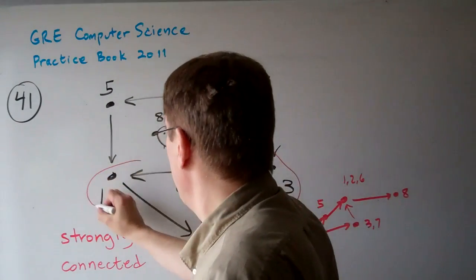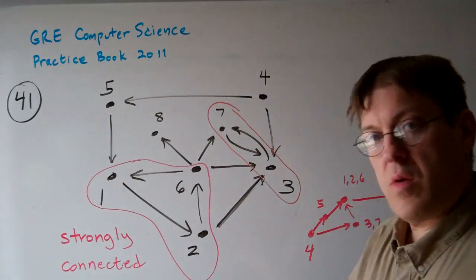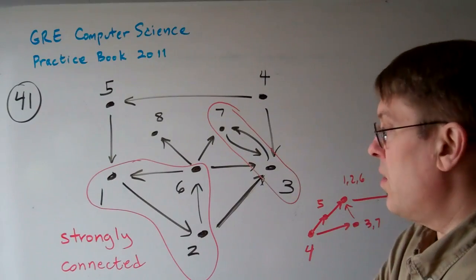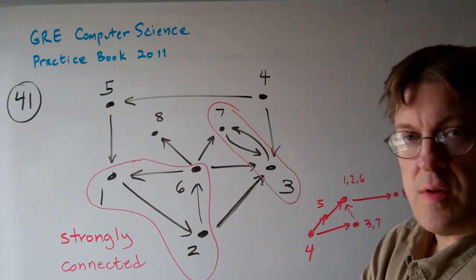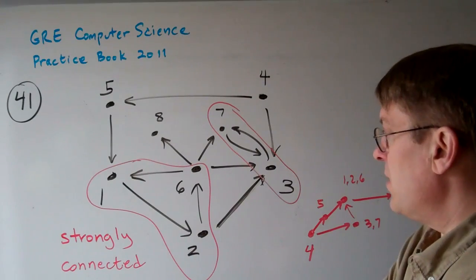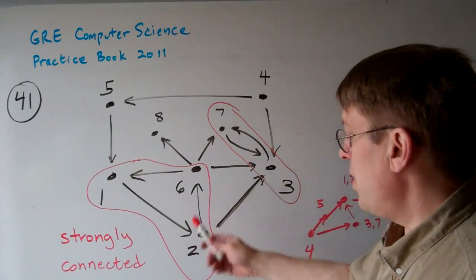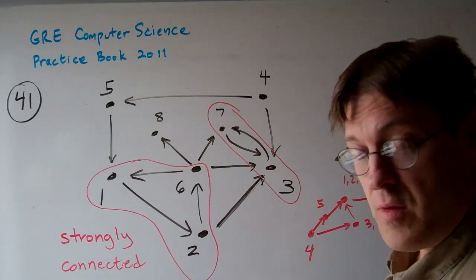This one here, 1, 2, 6, is also a cycle where all of the vertices can reach all the other vertices. Those are strongly connected. So what we have is basically two components that are strongly connected, and then these other vertices.